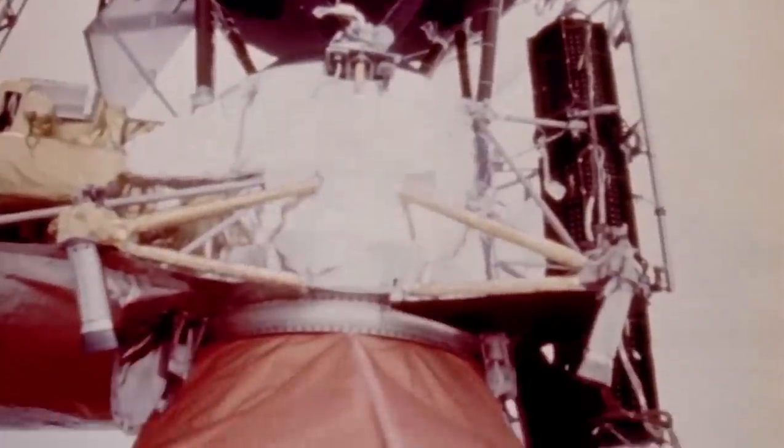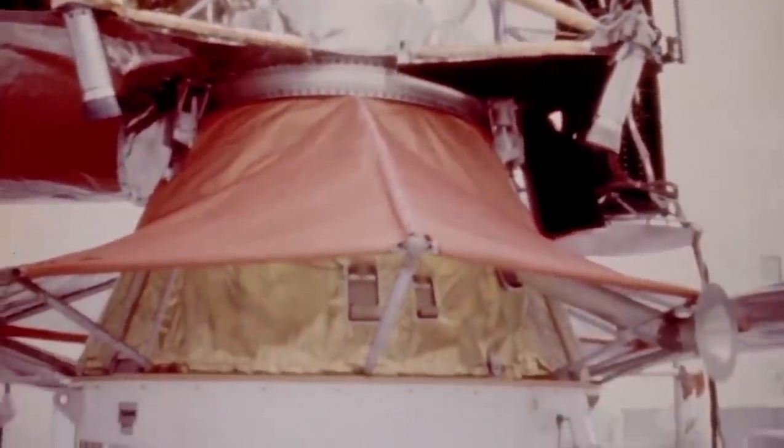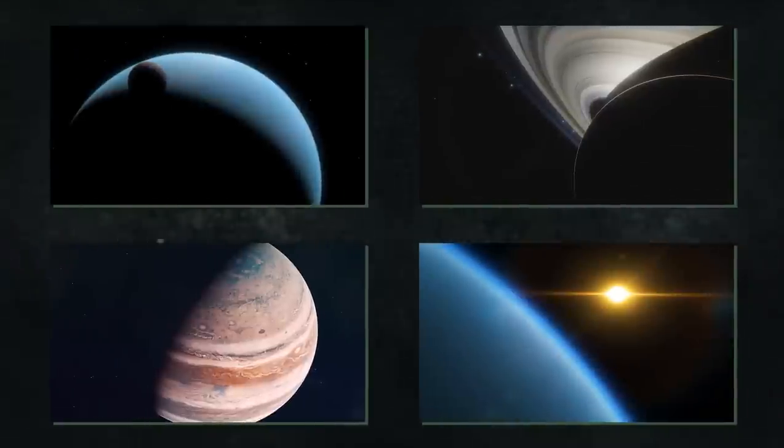As Earth's first representatives to the outer planets, the twin Voyager spacecraft captivated the public's attention in the 1970s and 1980s by taking up close pictures of Jupiter, Saturn, Uranus, and Neptune.